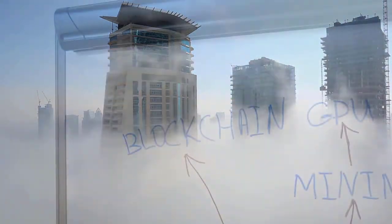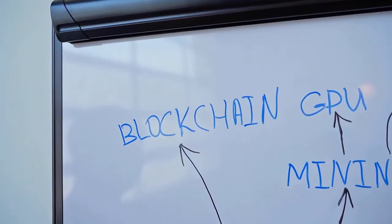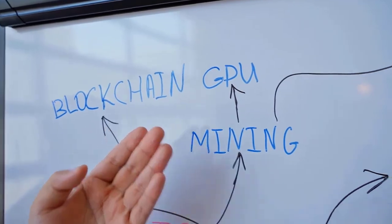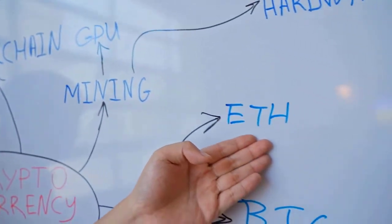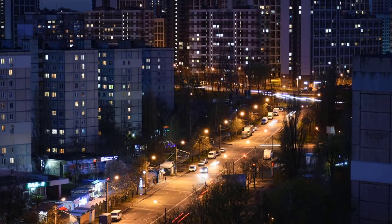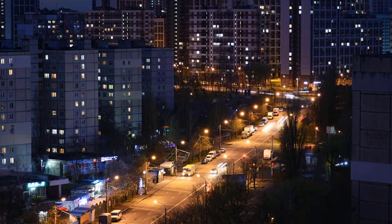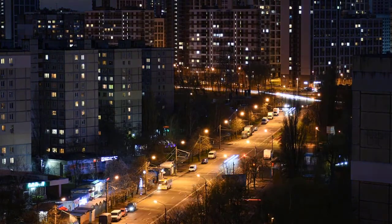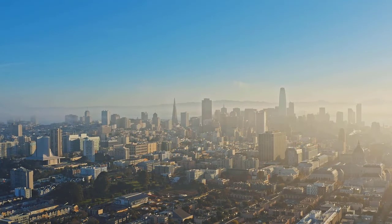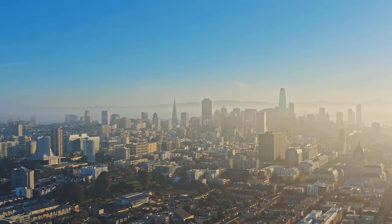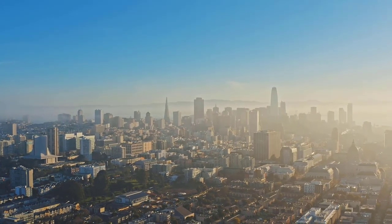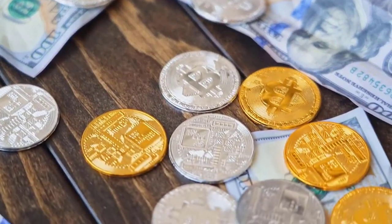The structural stage gives financial backers a method for procuring recurring automated revenue without securing their computerized resources. By utilizing Tectonic's conventions, financial backers can store their crypto resources into the structural organization and get a powerful yield with no lockup period. Likewise, borrowers on the stage can involve their computerized resources as collateral to take out credits and access liquidity.